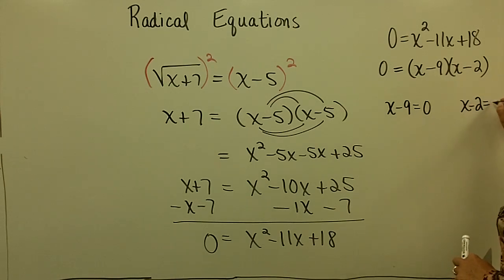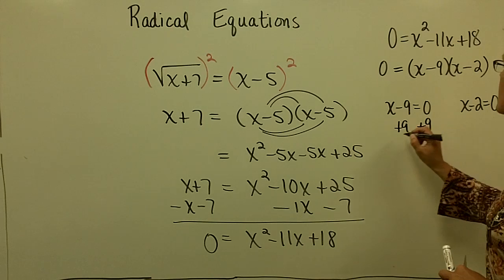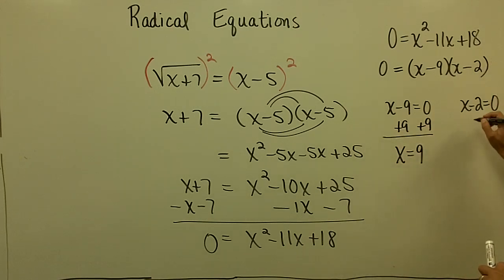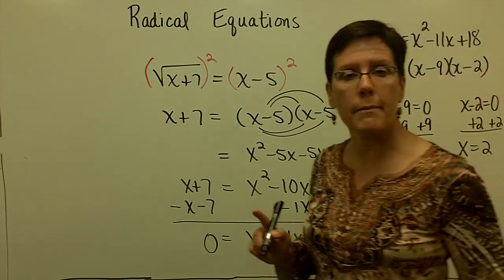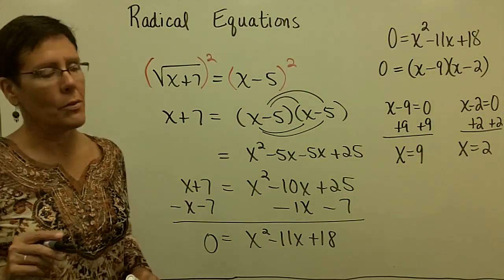The zero product rule says take each of those factors and set them equal to 0. So take both of these and set them equal to 0, and then add 9 to both sides to get x alone, and find out that one of your solutions is 9. And over here, add 2 to both sides to find out that x is equal to 2. And we found two solutions for this problem. Now what you've got to be careful of is one of them might cause a negative number under the radical.